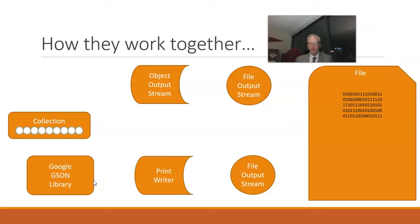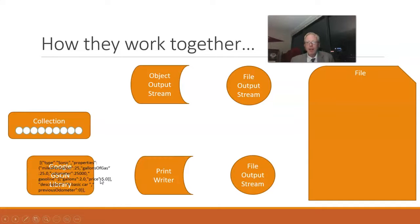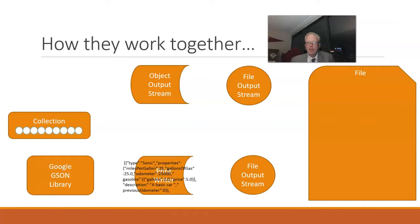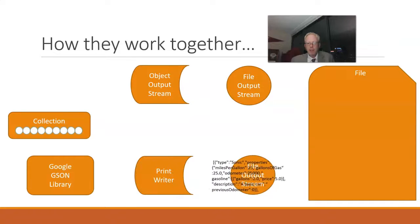But what's the string data going to look like? Well, that's what the Google JSON library is for. The Google JSON library will take a collection of objects, convert it to JSON, and then in our case we're providing that JSON, which is essentially text, to the print writer, and then the print writer provides that to the file output stream.